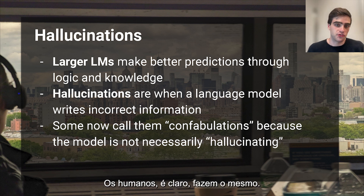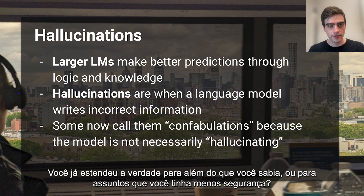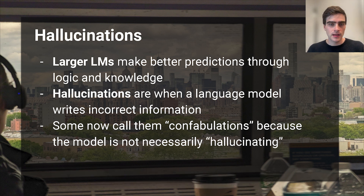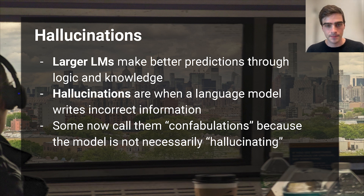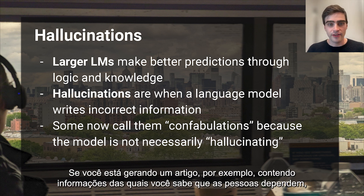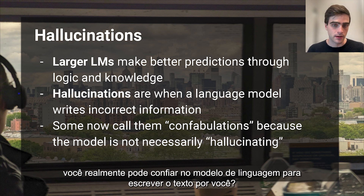Humans, of course, do the same. Have you ever stretched the truth in knowledge domains you feel less confident about? But in situations where truthful information matters, hallucinations are definitely problematic. If you're generating an article, for example, containing information you know people will depend on, can you really trust the language model to do your copywriting for you?